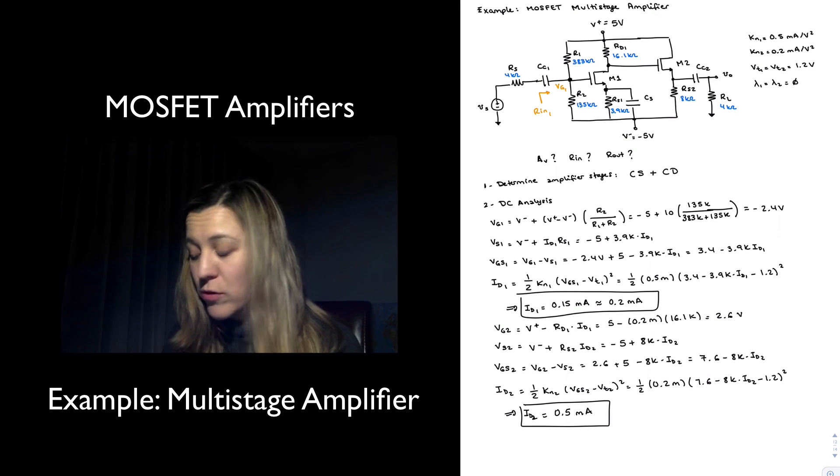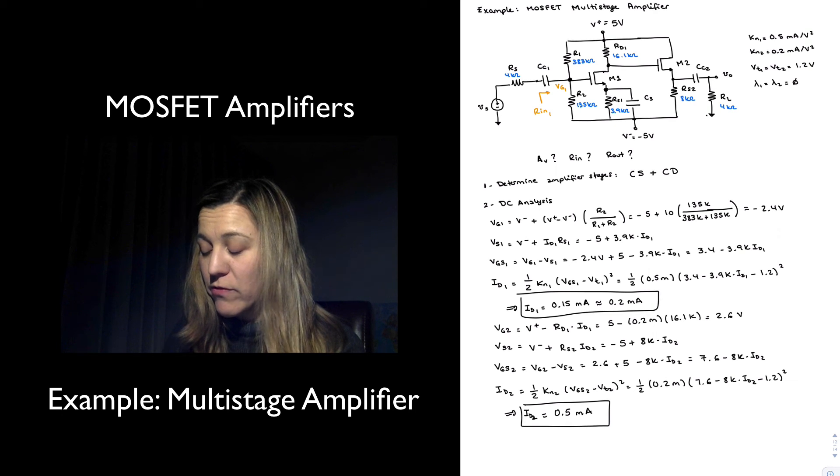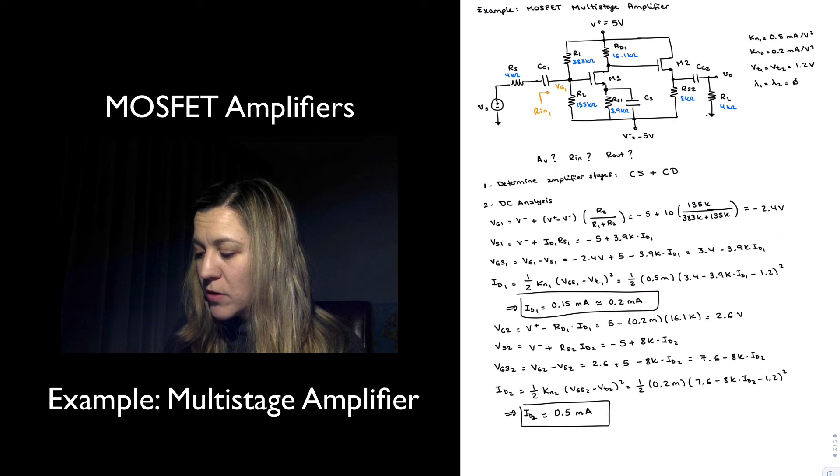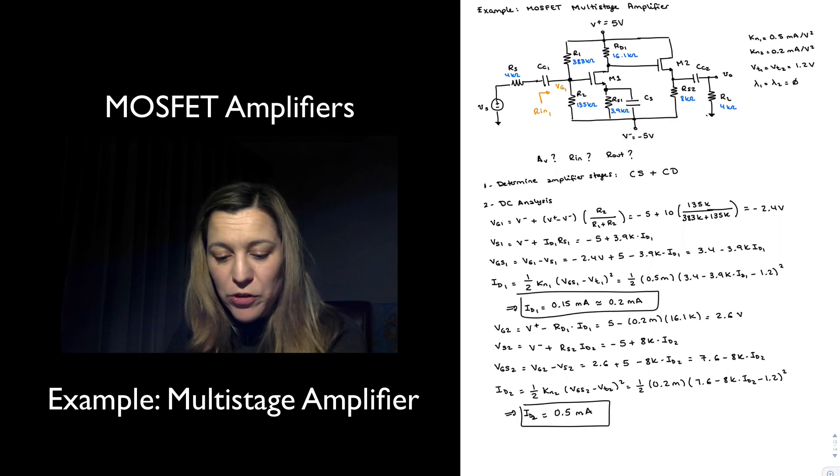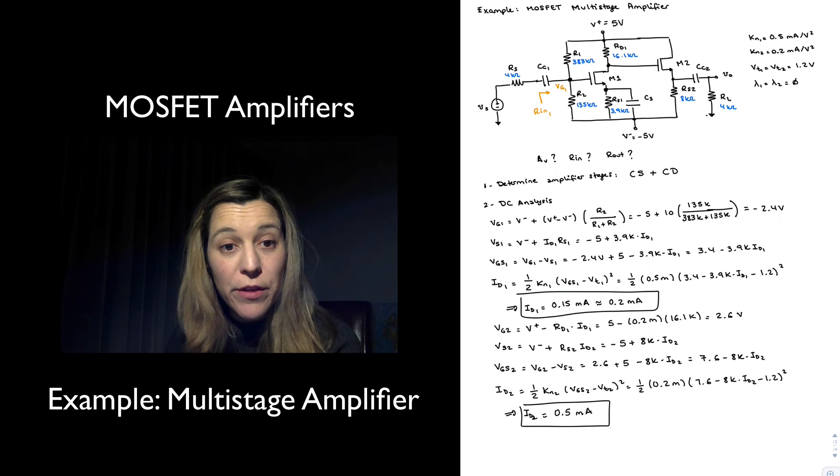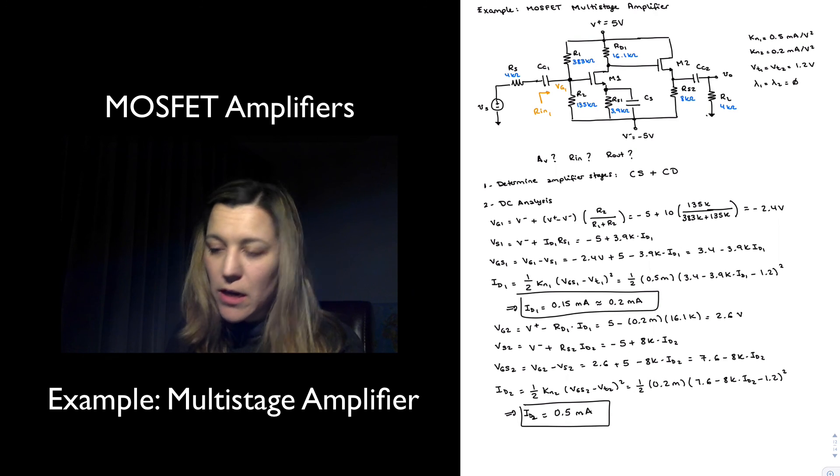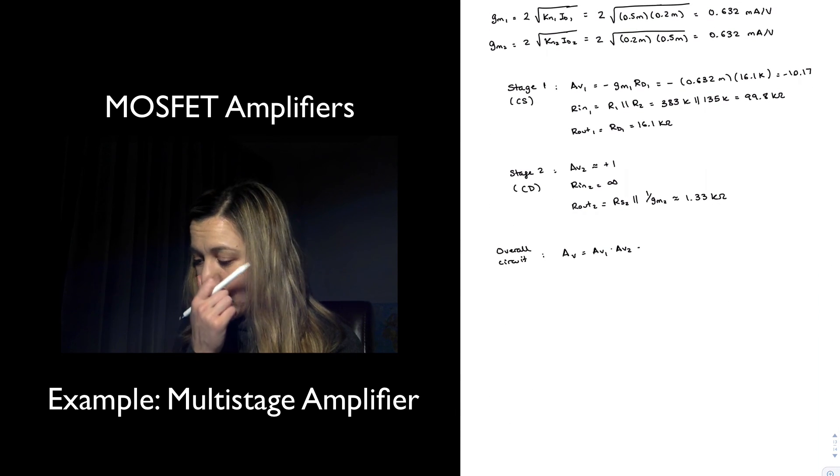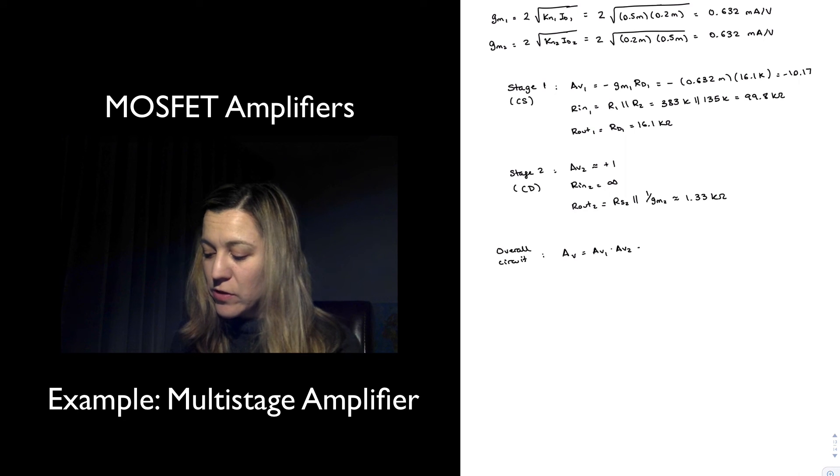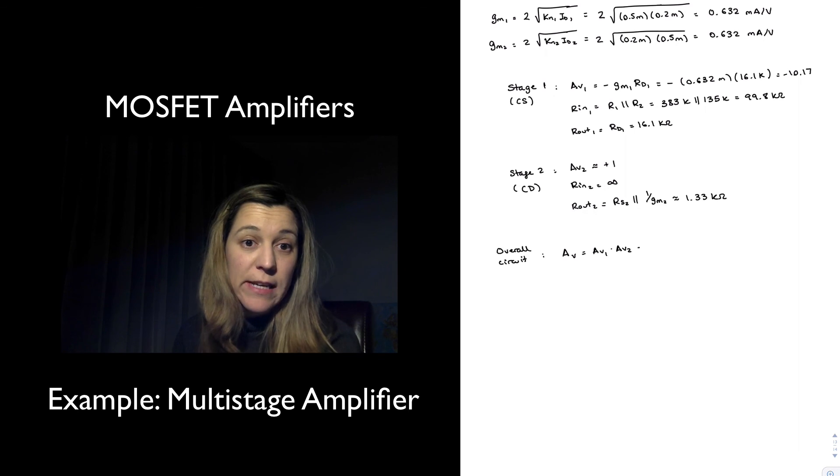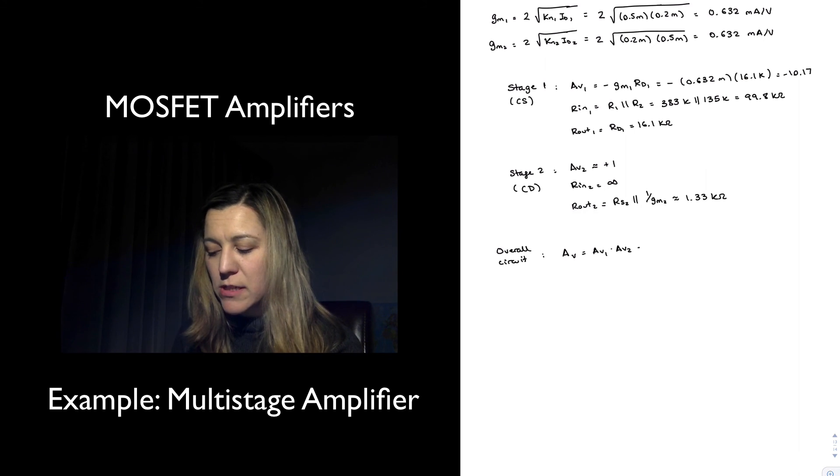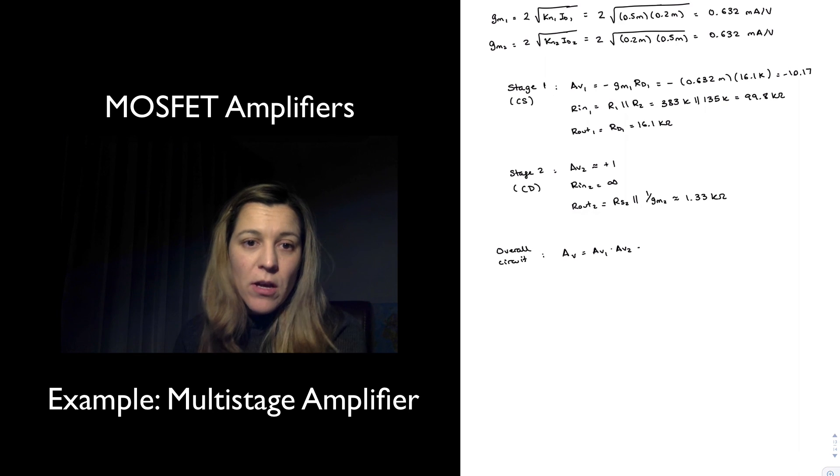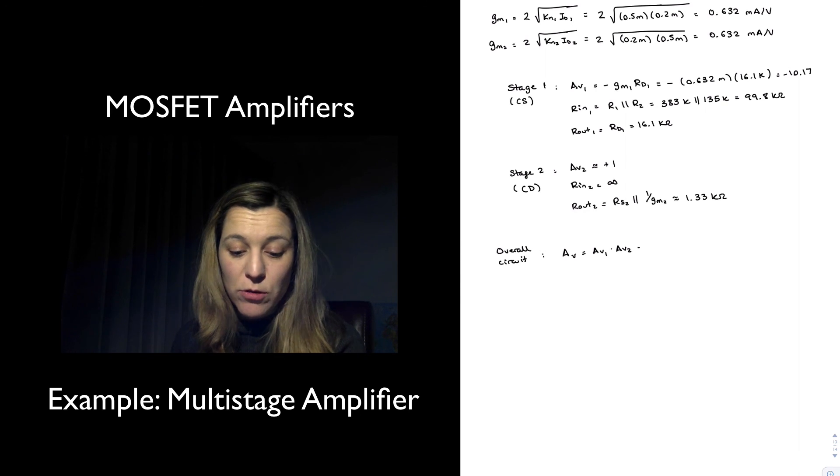In the case of the output loading factor I may have more of a loading factor there because the output resistance is going to be RS2 in parallel with 1 over gm, which we just calculated was 1.33k ohms, and RL is 4k ohms. And then there is the loading between the two stages, which is determined by the output resistance of the first stage and the input resistance of the second stage. Since the input resistance of the second stage is equal to infinity, I can ignore that loading factor as well.